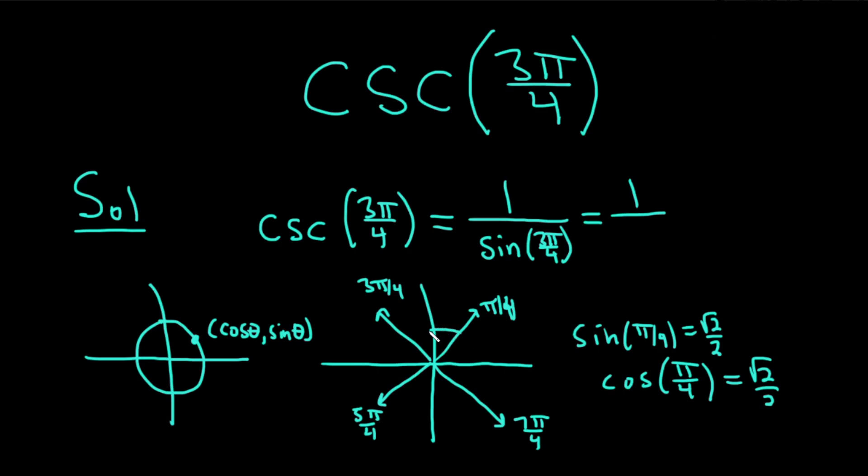So on the unit circle, every ordered pair is cosine, comma, sine. And so at these four points, the x-coordinate and the y-coordinate will always be square root of 2 over 2 or it'll be negative square root of 2 over 2.